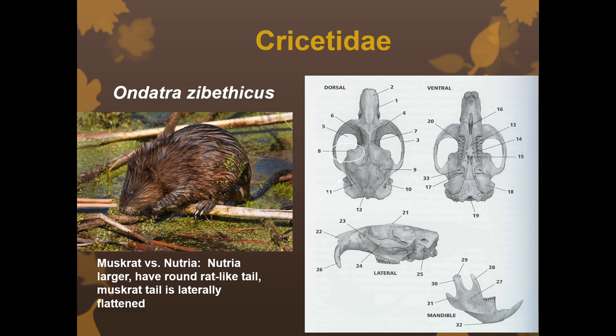Next in Cricetidae is Ondatra zibethicus, our muskrat. The muskrat has a long tail with hair on it — a pretty common species and quite a bit larger than other members of this family. They have a laterally flattened tail, which distinguishes them from nutria, which are larger and have a round rat-like tail. For this class you just need to know the muskrat. The muskrat skull is one you'll need to know — it has eyes facing forward and post-orbitals with a nub-like pattern, covered in the skull video.